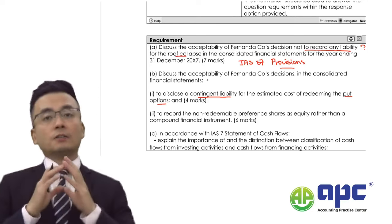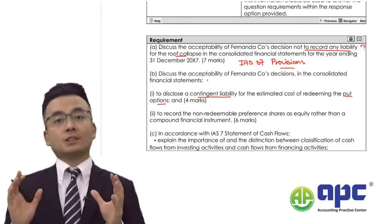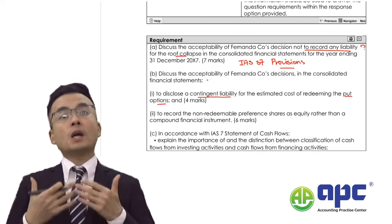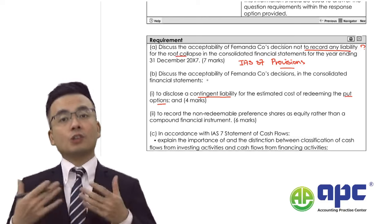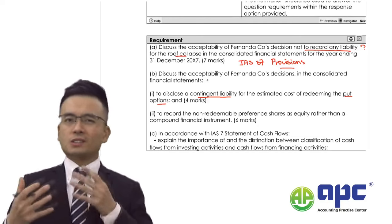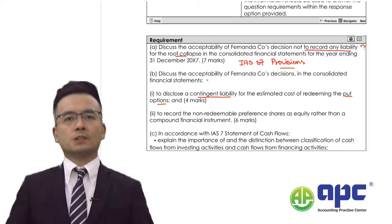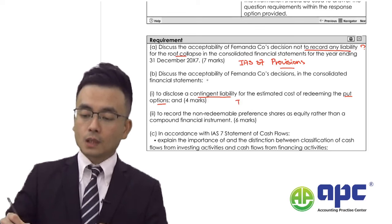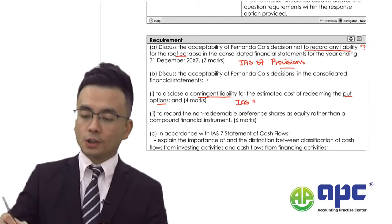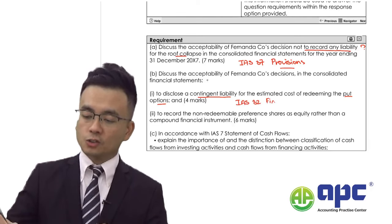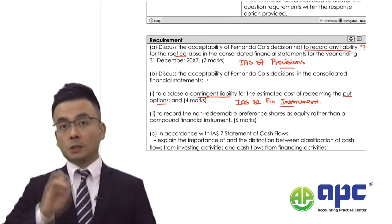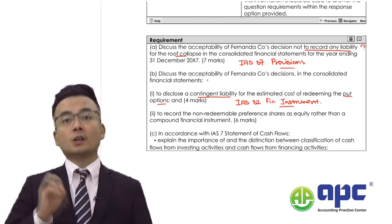If the buyer exercises the put option at some point in the future, from the company's point of view it will have an obligation to exercise it. So it seems like a financial liability that we need to recognise. IAS 32 — the financial instruments accounting standard — pops into my mind regarding the presentation part.